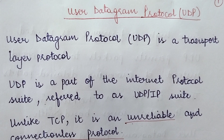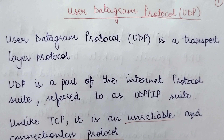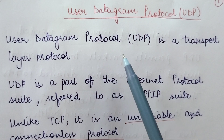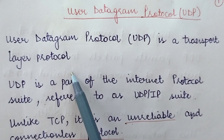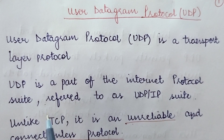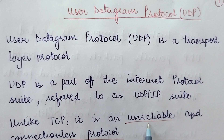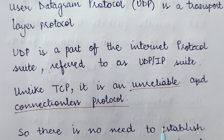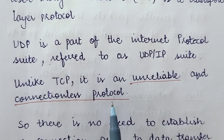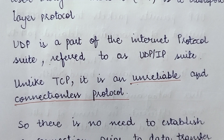Today we are going to study the User Datagram Protocol, which we also call UDP. UDP is a transport layer protocol and is a part of the Internet Protocol suite, also referred to as the UDP/IP suite. Unlike TCP, the Transmission Control Protocol, which is considered a reliable protocol, UDP is an unreliable protocol and also a connectionless protocol. When we require connectionless services, we use the UDP protocol.